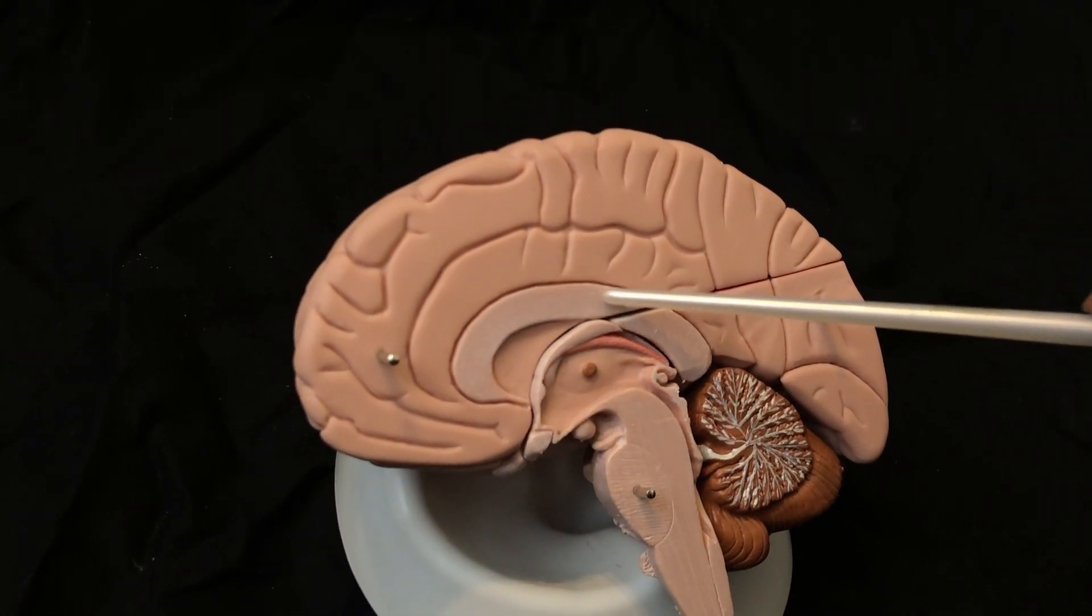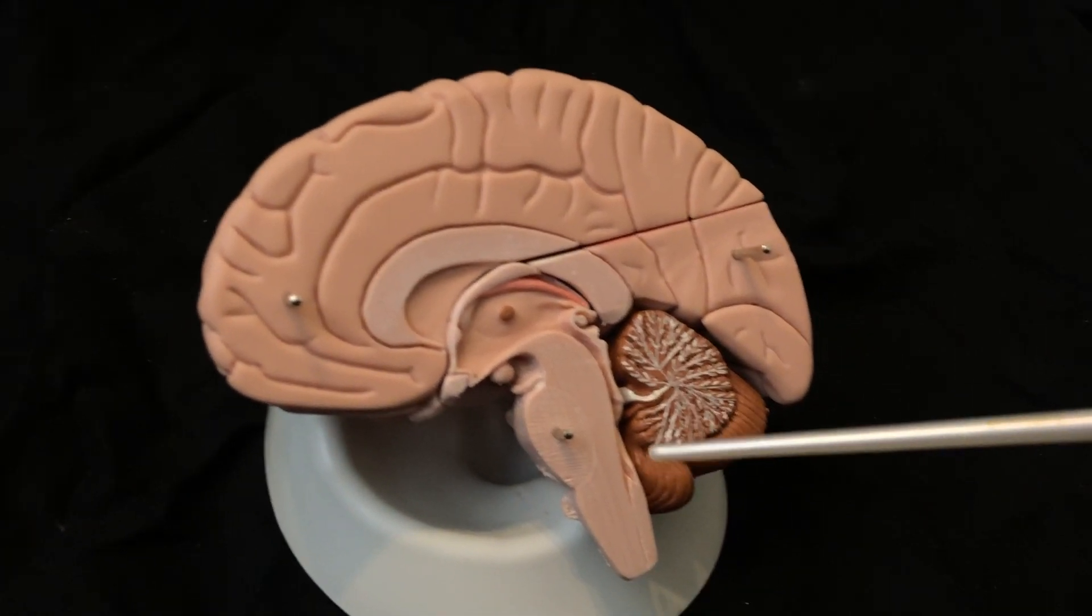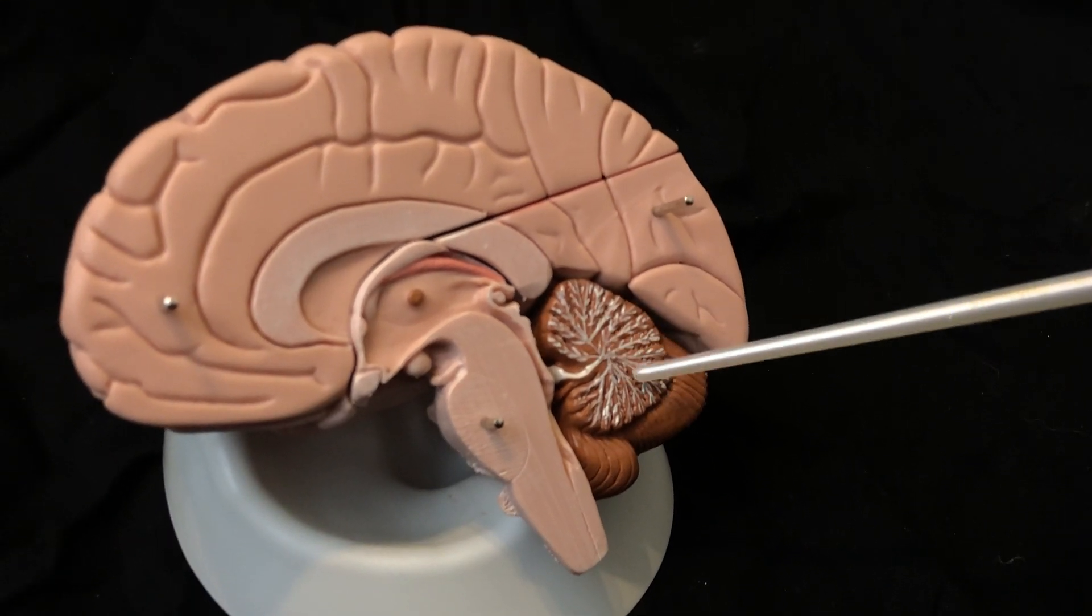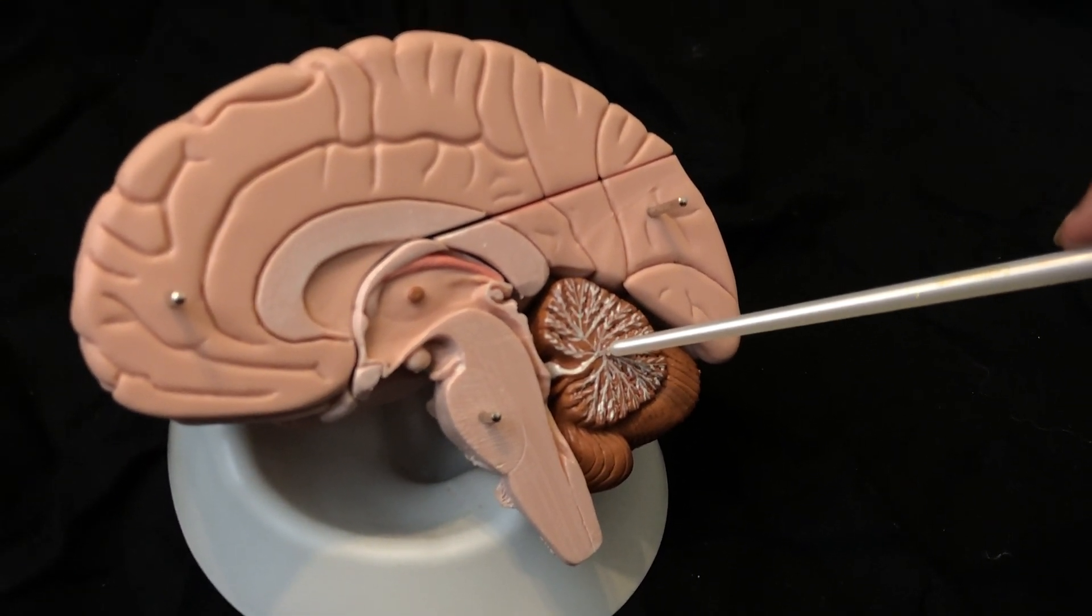Here we have the corpus callosum. If we look right in here, this is the cerebellum. All of the white parts branching off is the arbor vitae.